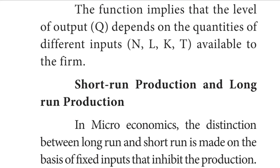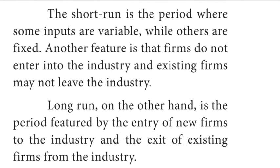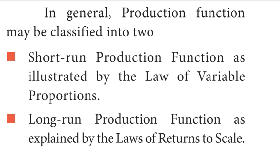Short-run and long-run production function. In microeconomics, the distinction between long-run and short-run is made on the basis of fixed inputs that inhibit production. The short-run is the period where some inputs are variable while others are fixed; firms do not enter or leave the industry in the short-run. Long-run is the period featured by the entry of new firms to the industry and the exit of existing firms. Production function may be classified into two: short-run production function as illustrated by the law of variable proportion, and long-run production function as explained by laws of return to scale.